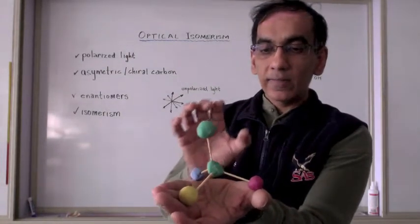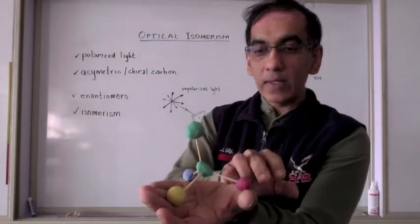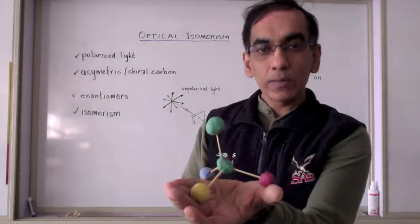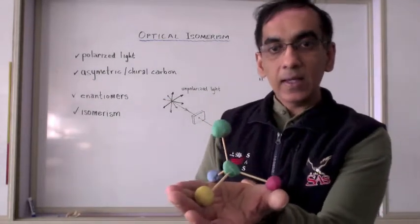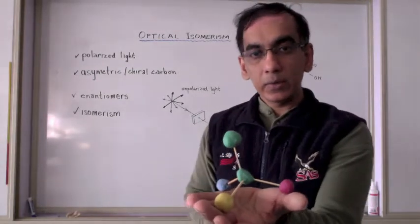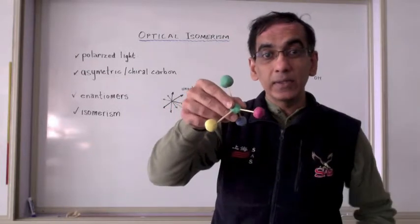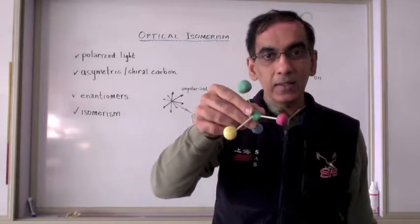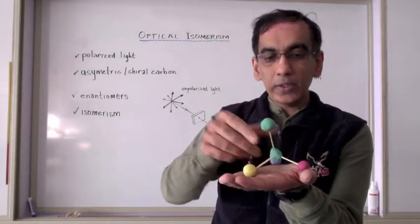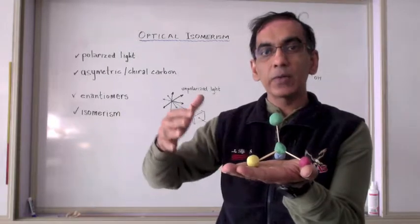These represent four single bonds made by this carbon atom. If these four bonds join to four distinct groups, then a very unique phenomenon exists with this molecule. Using your models, I would like you to build a replica of this structure and then to hold it in front of a mirror and construct its mirror image.